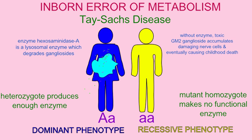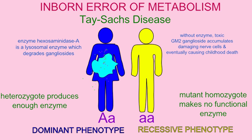Heterozygotes for mutations in this enzyme still produce sufficient enzyme to break down these lipids and prevent the accumulation of toxic byproducts.